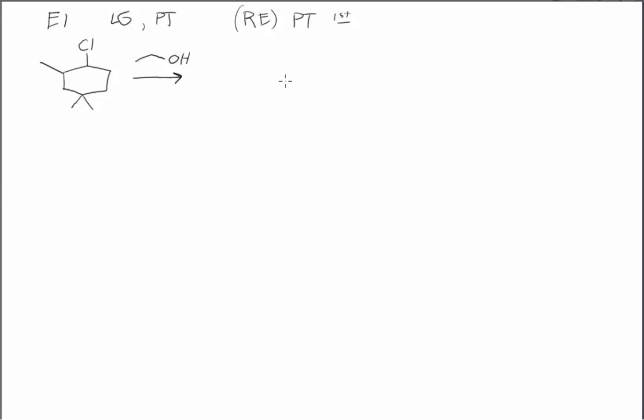I hope I can convince you that that's not something we need to memorize. It's just something we need to understand as we go along and evaluate the reagents and the substrate. So let's take a look at this substrate. This is a secondary substrate. Cl is a good leaving group, so we don't need a proton transfer before it can leave. We can do that right off the bat.